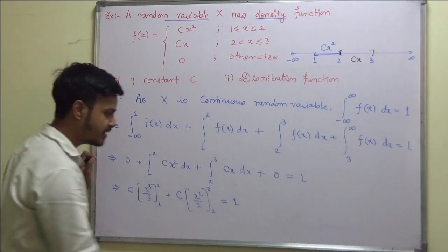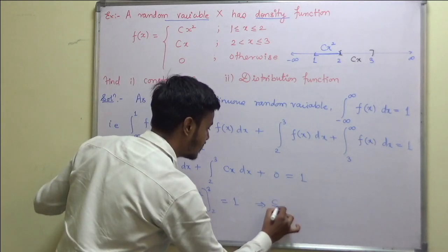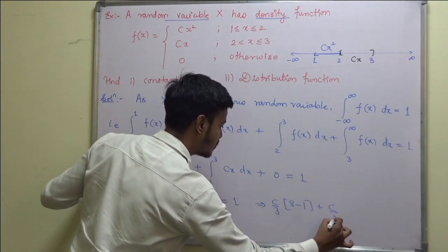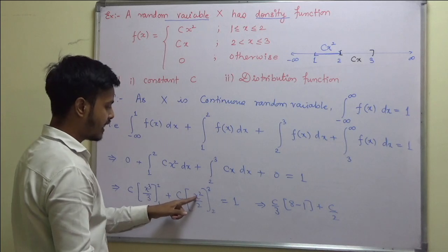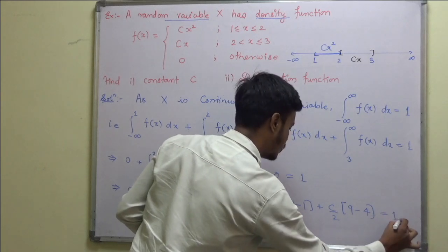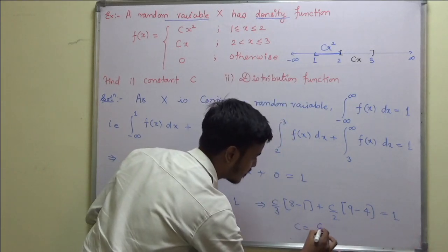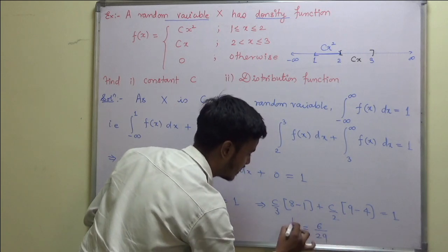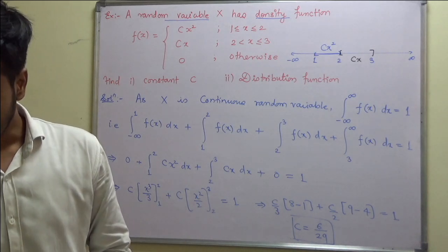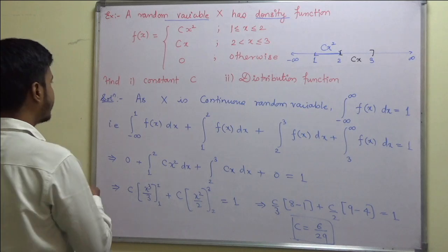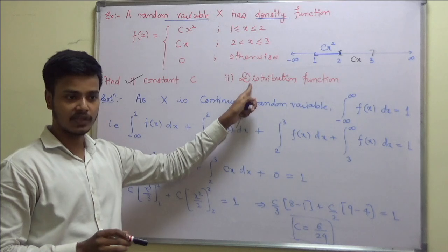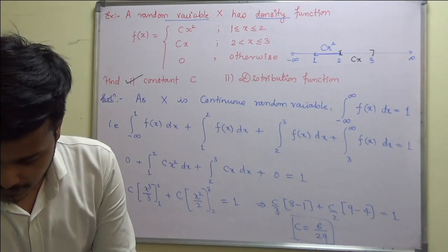Applying the limits: c/3·(8 − 1) plus c/2·(9 − 4) equals 1. When you solve this, c comes out to be 6/29. So that is my first part. Now I have to find out the distribution function, so let us find out the distribution function.